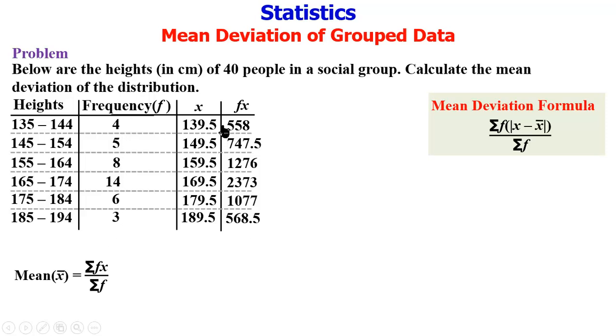So we are going to add two columns here - the column for f and the column for fx. Summing up this we have 40. Summing up this from our calculator we have 6600. Substituting into this formula we have 6600 divided by 40.